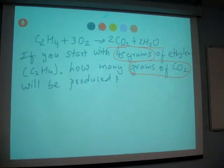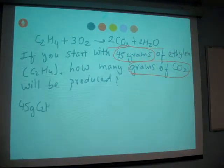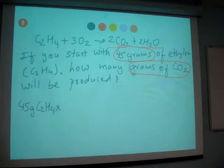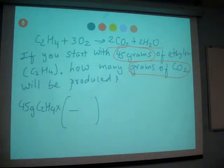Let's start with 45 grams of ethylene. We convert into moles of ethylene. 1 mole of ethylene - its molar mass is 28 grams. C2H5 - C2H4, sorry, the ethylene molecule.